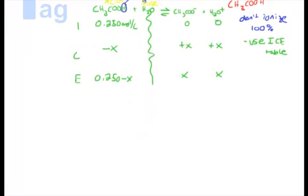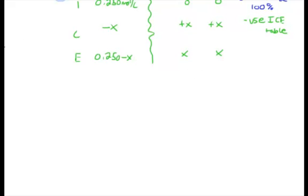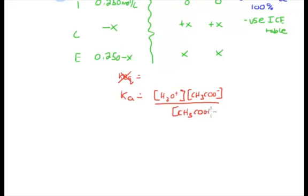Now we think back to KEQ expressions and K expressions. We don't really call it KEQ for acids, we call it Ka. So Ka is equal to the concentration of our product, which is our H3O positive, multiplied by our CH3COO minus, which is our acetate, divided by the concentration of our CH3COOH.